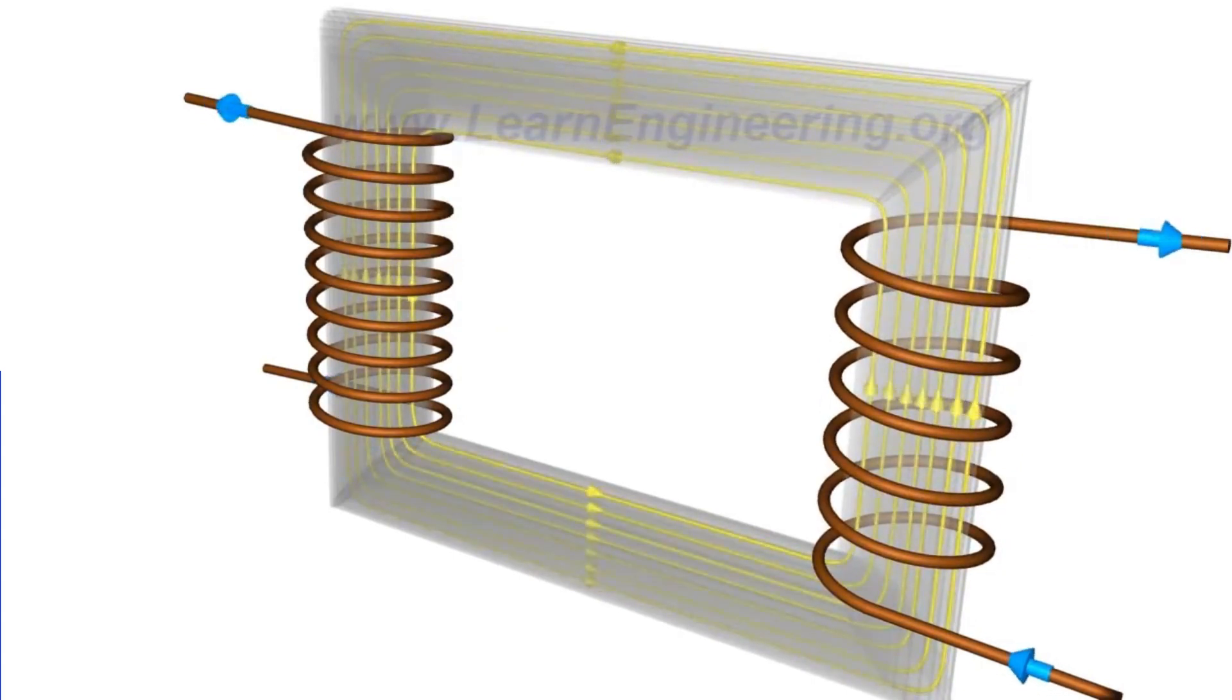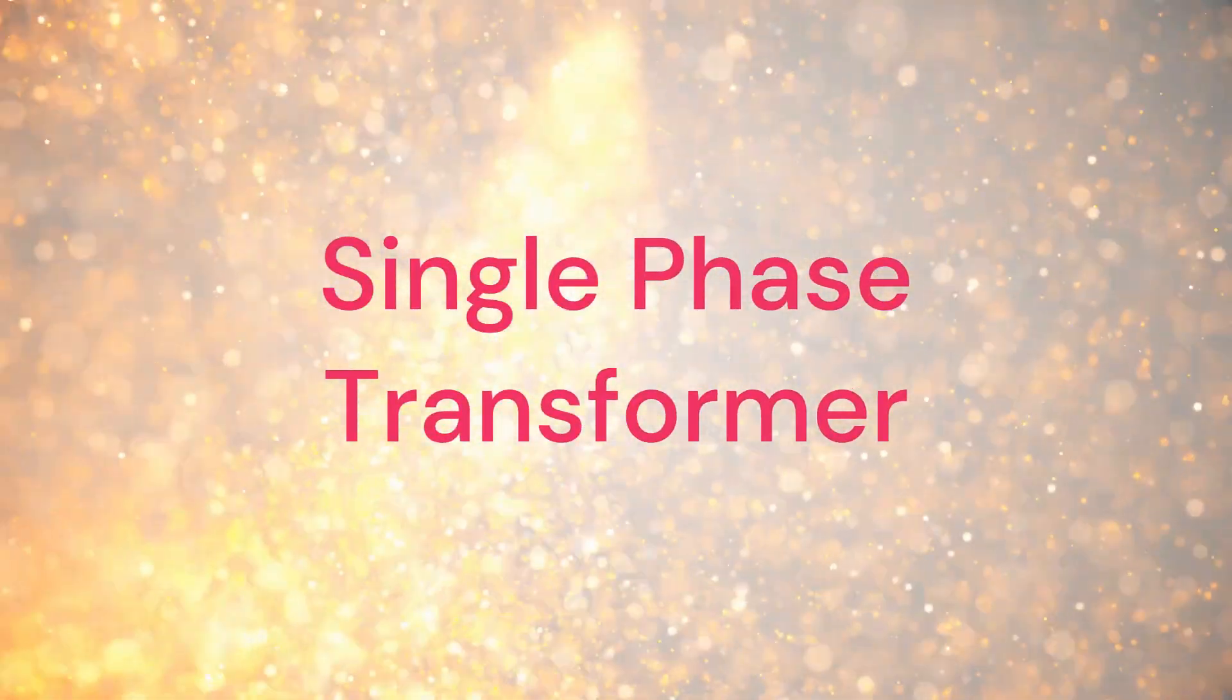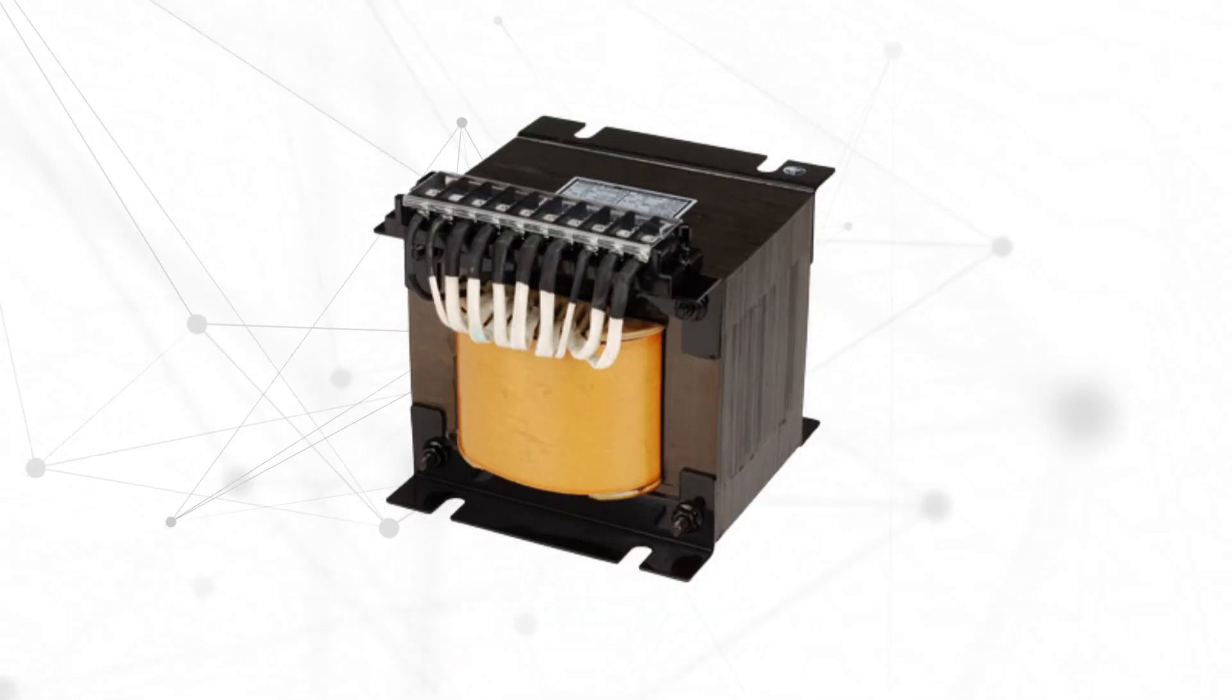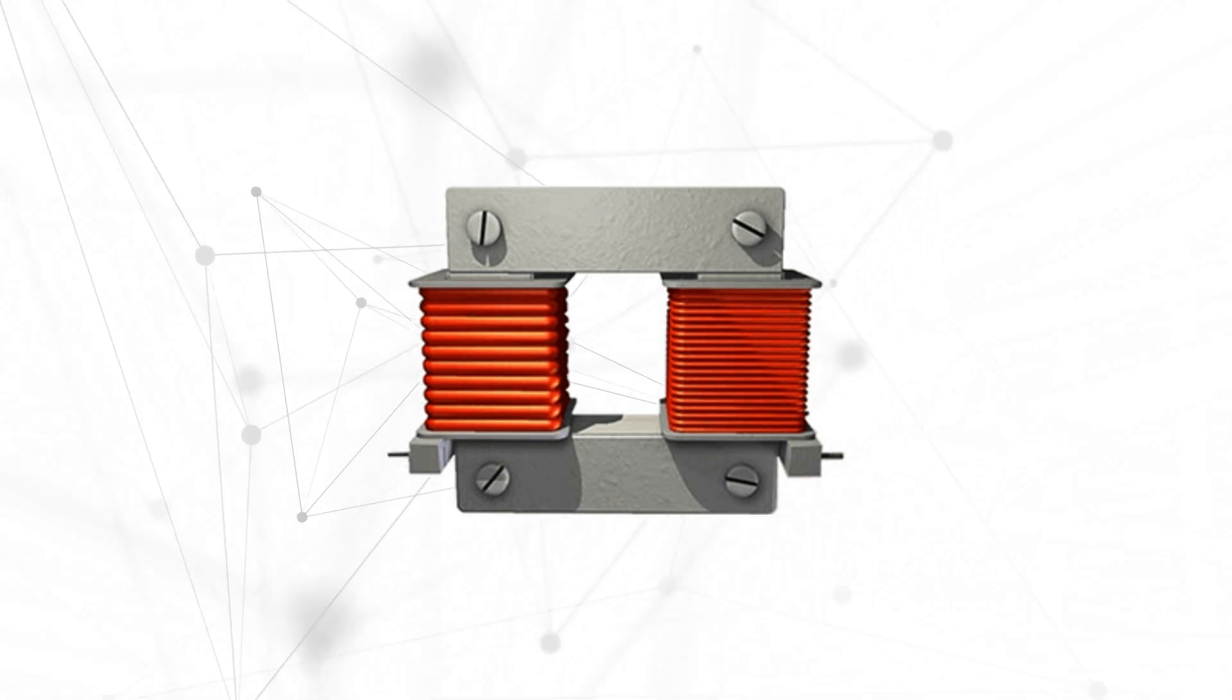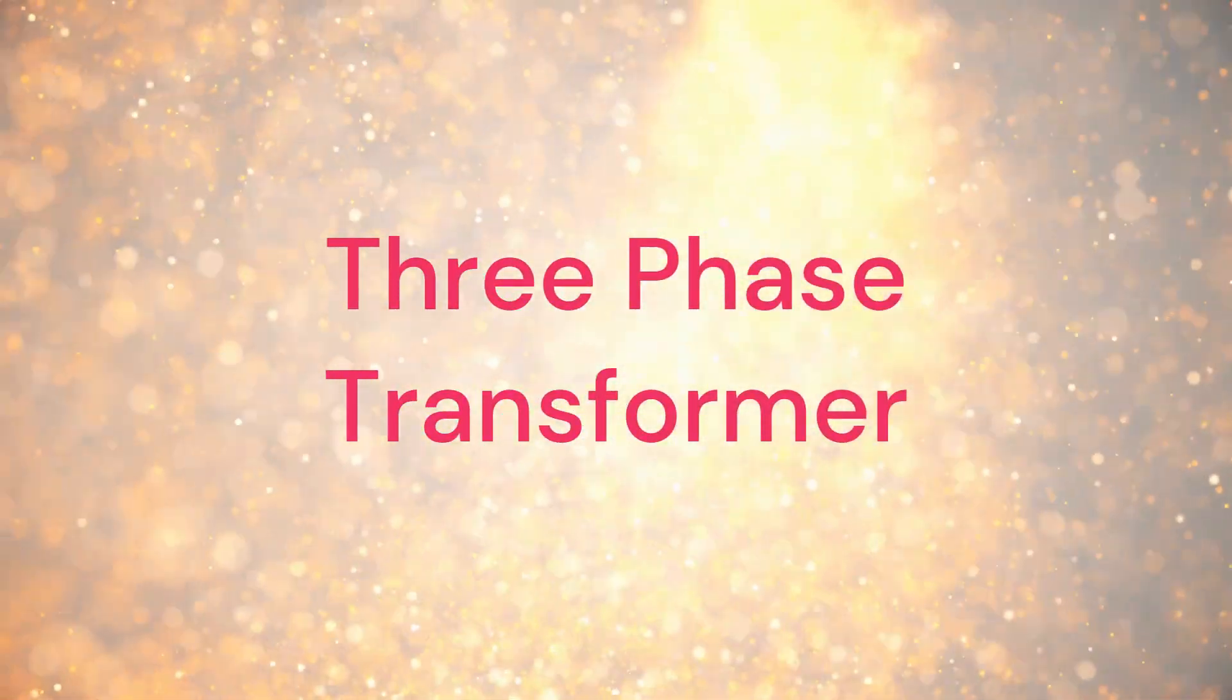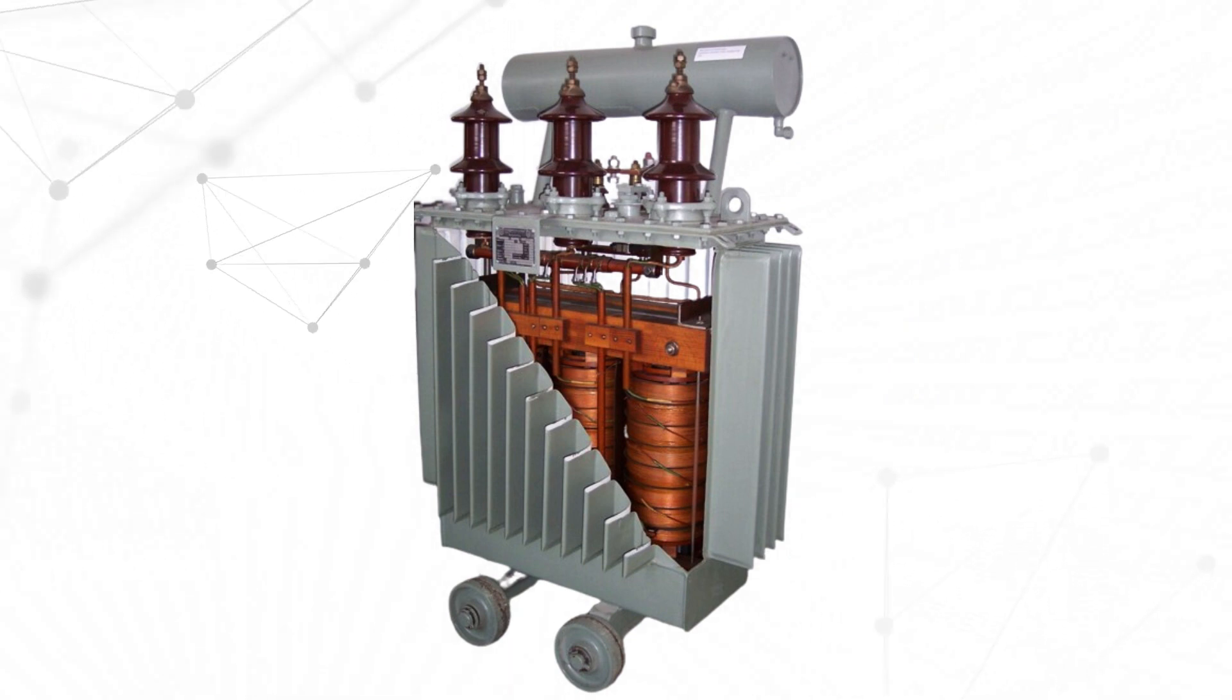Transformers come in various configurations, including single-phase and three-phase. Single-phase transformers are designed for single-phase AC power. They have two coils, primary and secondary, for transferring energy. They're commonly used in residential applications. Three-phase transformers have three primary and three secondary coils, ideal for industrial applications. They're crucial for power distribution in factories and commercial settings.